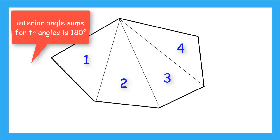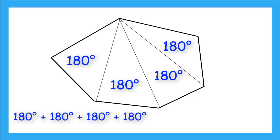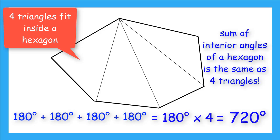Do you remember what the sum of the interior angles for a triangle is? That's right. A triangle has 180 degrees. So if each of these triangles has 180 degrees, then the sum of the interior angles for all four triangles would be 180 plus 180 plus 180 plus 180, or 180 times 4, which gives us 720 degrees. And since four triangles fit inside my hexagon, I can say the sum of the interior angles of a hexagon is also 720 degrees.